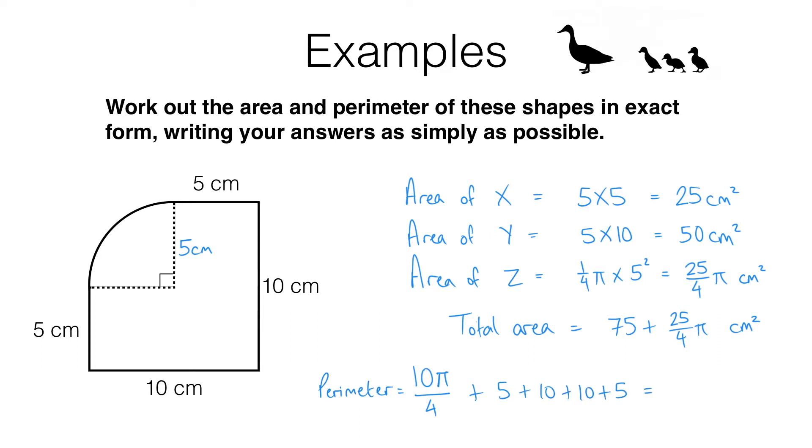We're still not finished. We can simplify this expression. These numbers here are not in terms of pi, so they are like terms which we can collect. They are going to add up to 30. And we've still got this 10 pi over 4, which we can simplify to 5 pi over 2. All we've done there is divide the numerator and denominator of that fraction by 2.